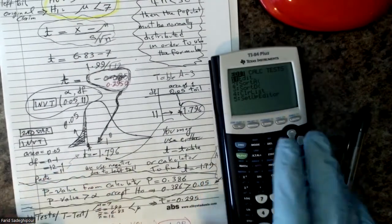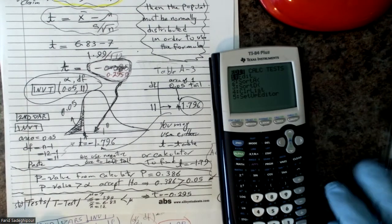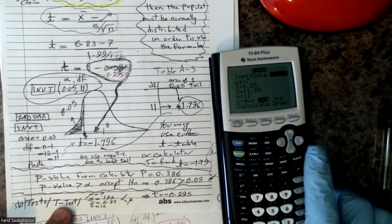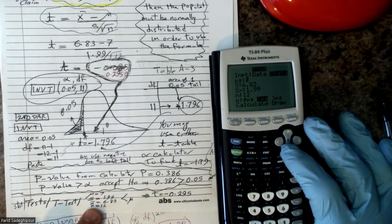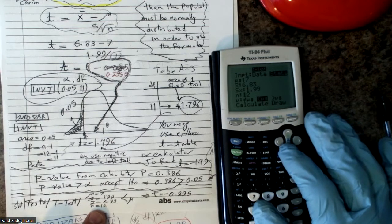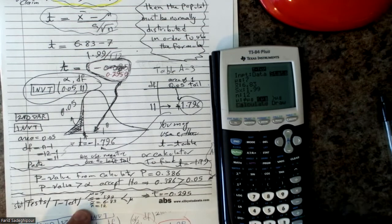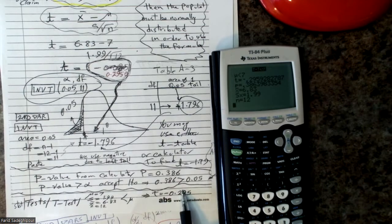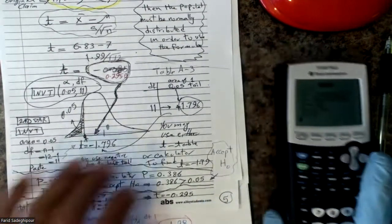Using the calculator: go to Stat, then Test, then T-Test. Put all the numbers — mean of population is 7, mean of sample is 6.83, standard deviation of sample is 1.99, n is 12, and our test is the left tail. When you enter it, it gives you the t-value of minus 0.2959. This matches what we found using the formula. Use the calculator to verify your answers.